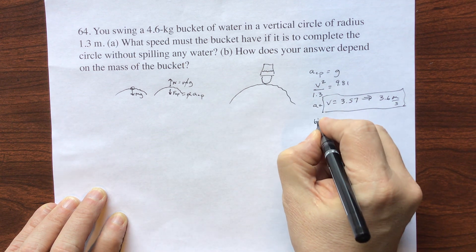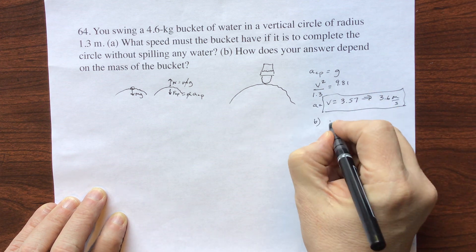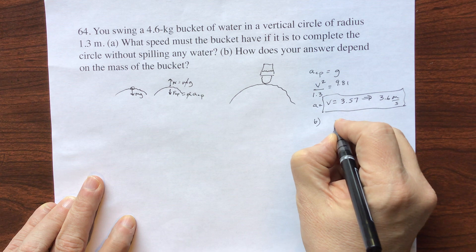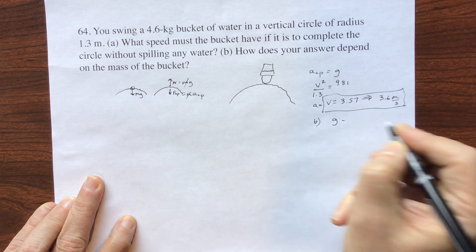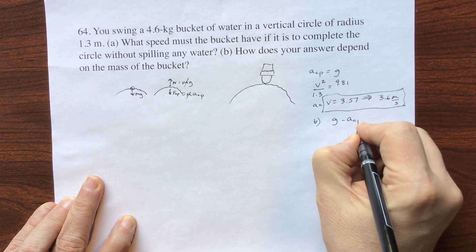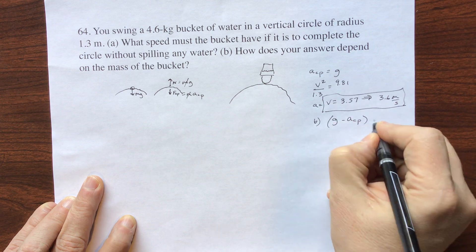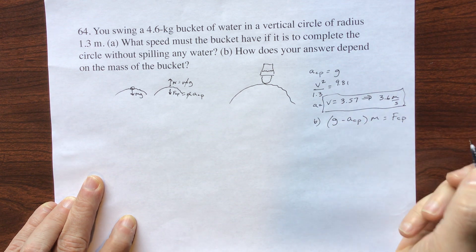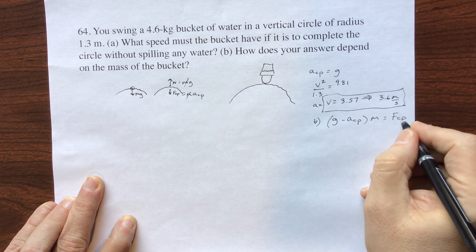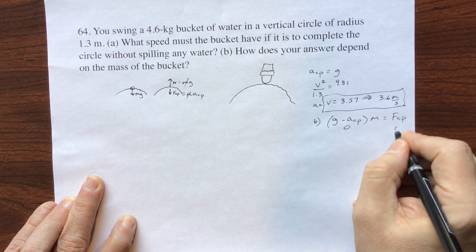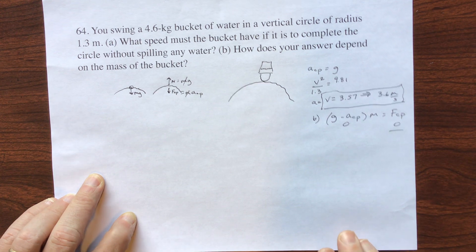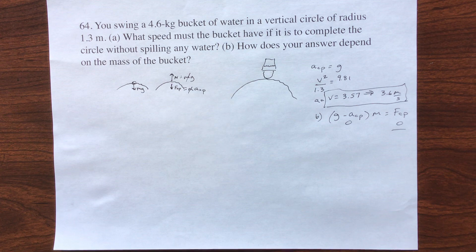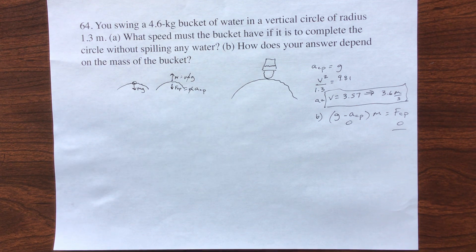I guess if you want to write something, I would say, you could say G minus centripetal force times M equals centripetal force, and this is zero. That means your force is zero. Not sure exactly what to say, but that's a good guess. All right. Thank you.